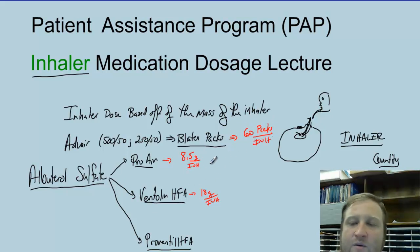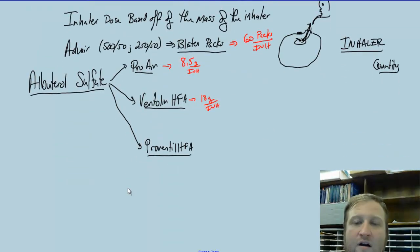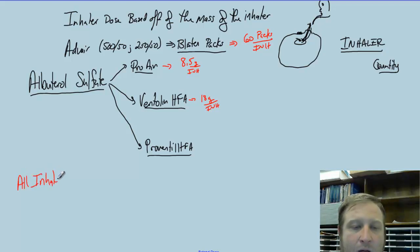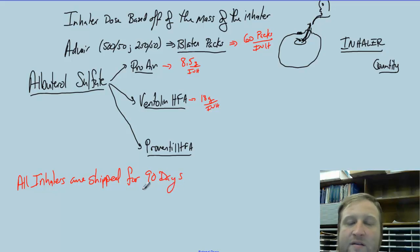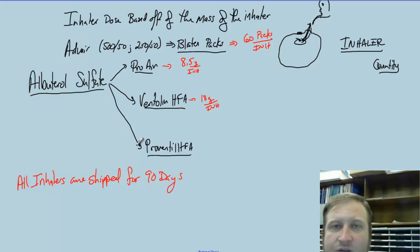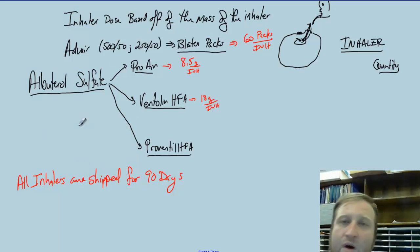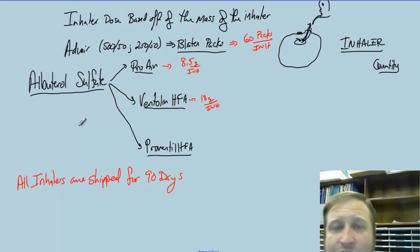All inhalers are shipped for a 90-day supply. So we don't have to worry about them being any more or any less — we don't have to worry about a 120-day supply. We know they are all shipped for 90 days, so we're going to acquire these for our patients every 90 days, just like we did with the insulin and some of our other oral medications.